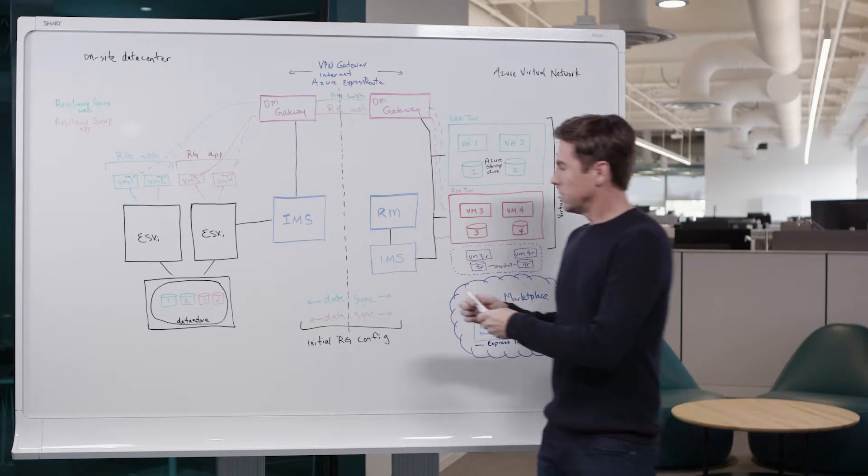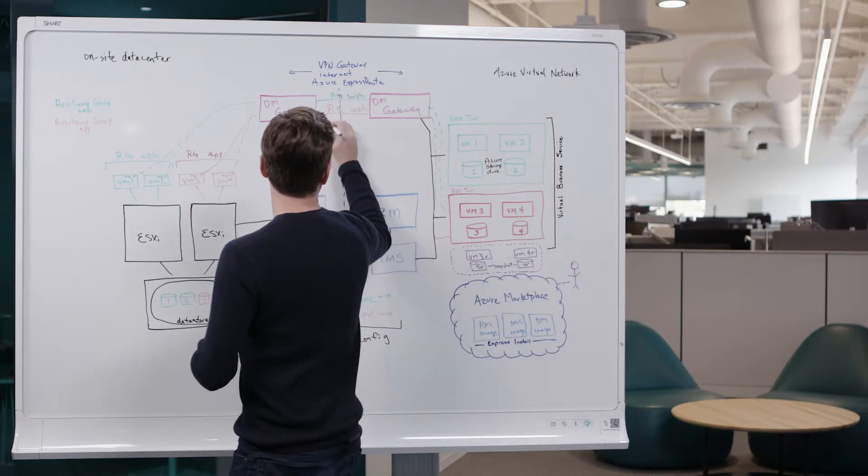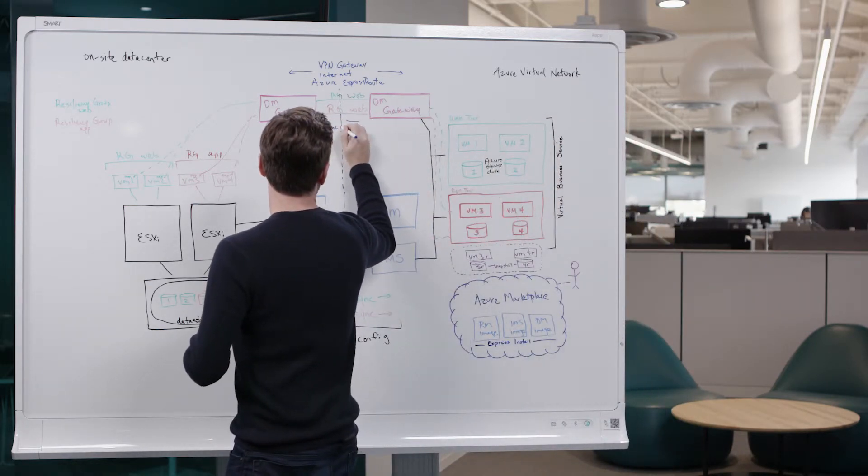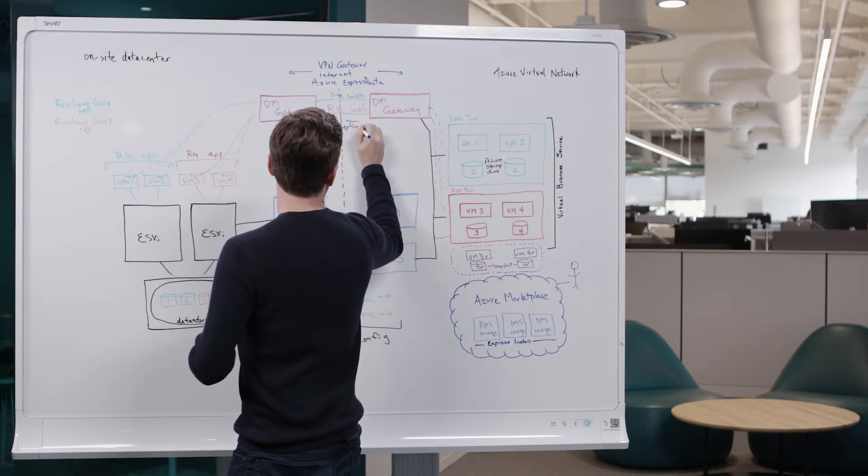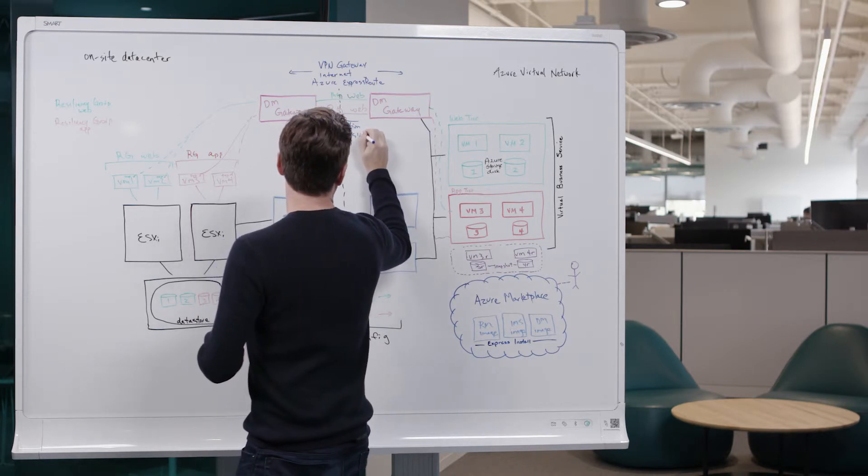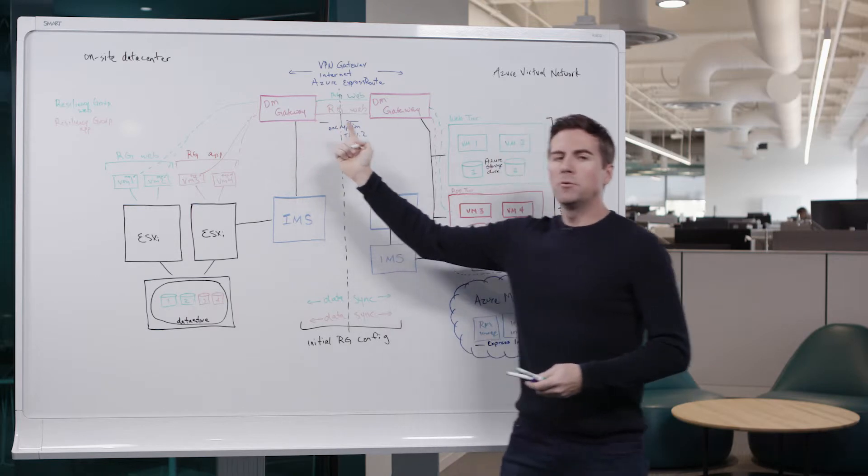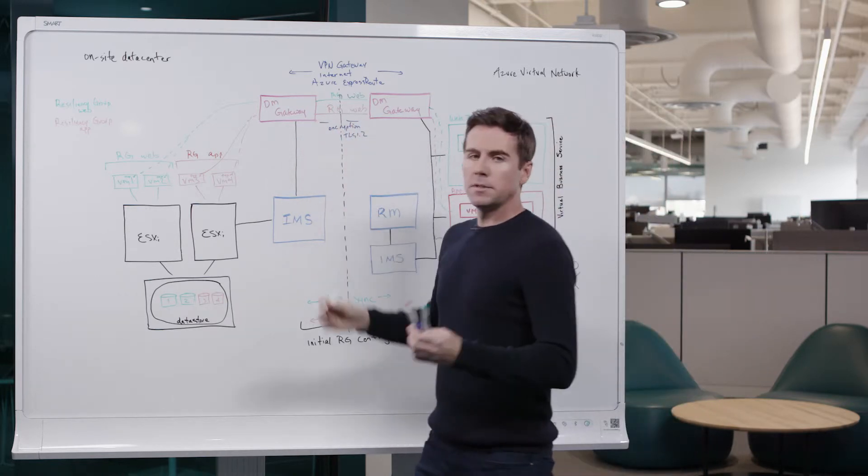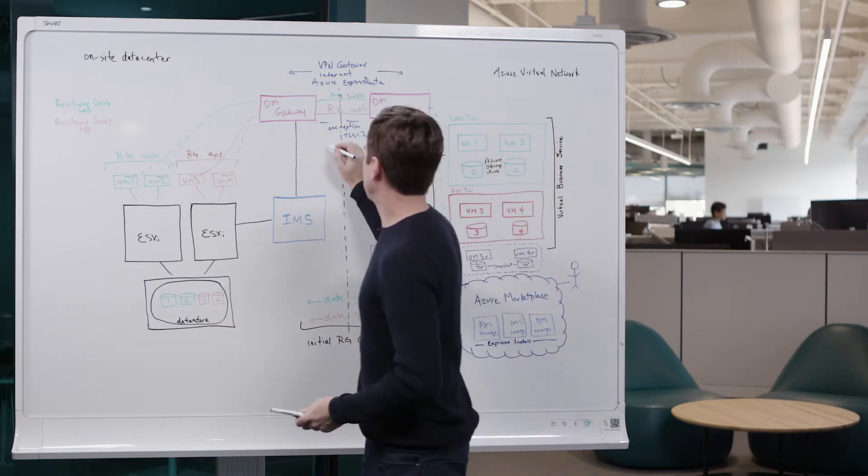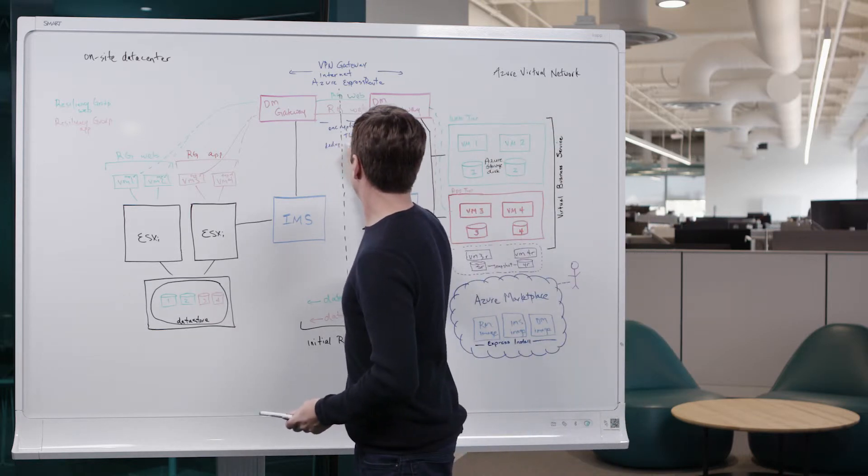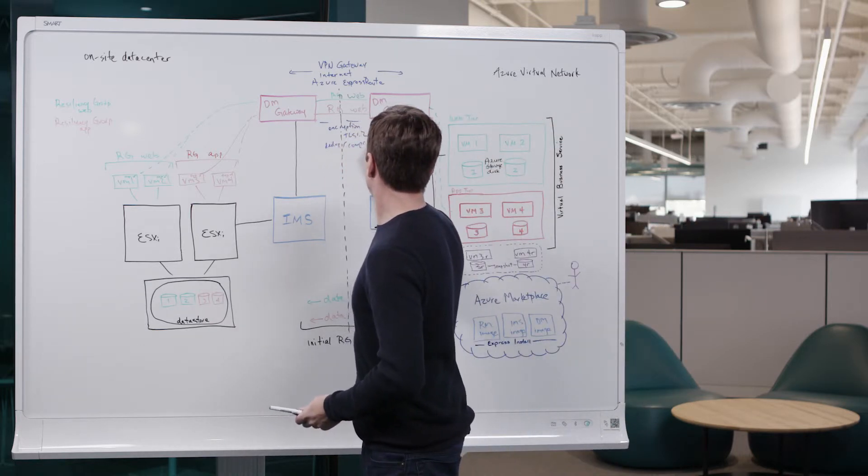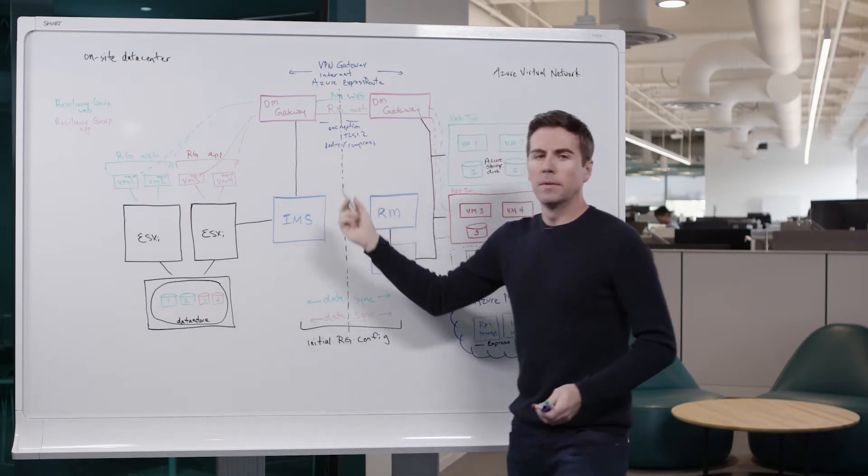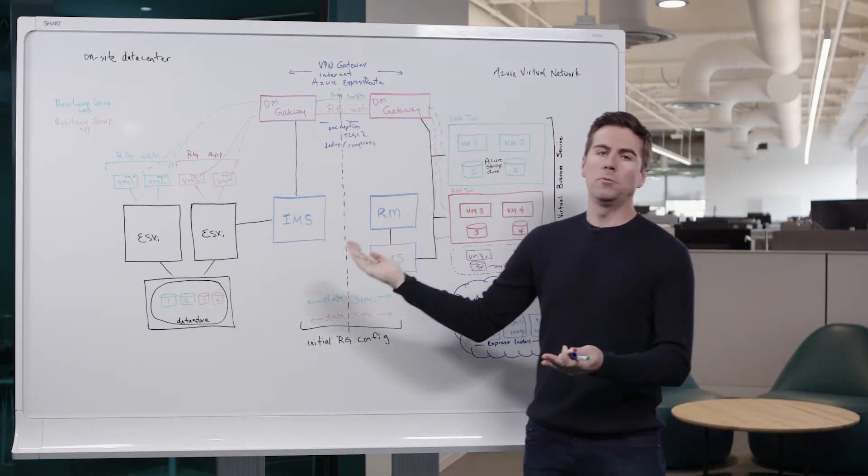Also to note, there are a couple of things here that are of interest. The traffic between our two data mover gateways is encrypted. We also optimize the data flow with deduplication and compression, so that we're only moving unique data between our sites.